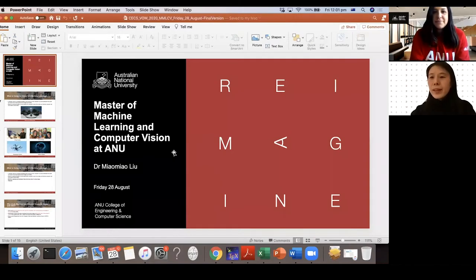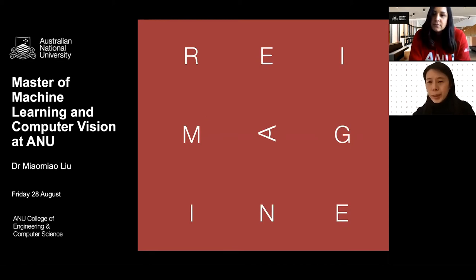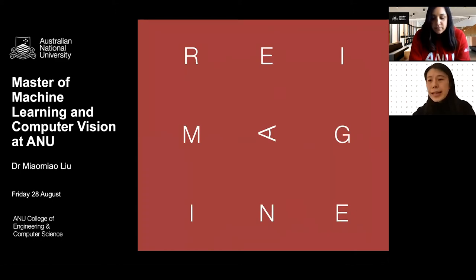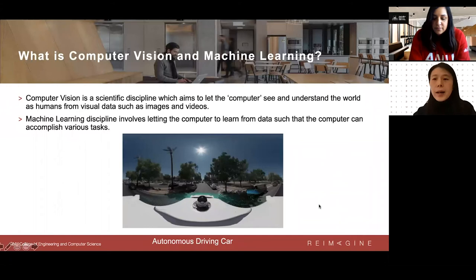Hello everyone, welcome to today's session. I'm Mia Mia Liu from the computer vision and robotics group in CACS. Today I'm going to introduce our Master of Machine Learning and Computer Vision program at ANU. It's a new program created in 2019. Before I introduce the program, I'd like to give a brief introduction to machine learning and computer vision, given the diverse background of the audience.